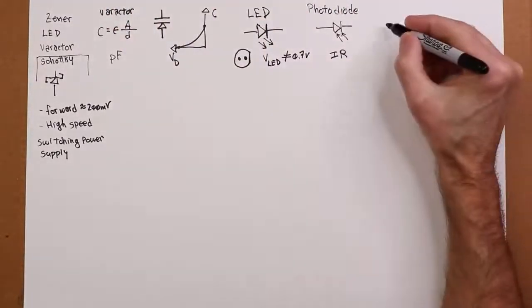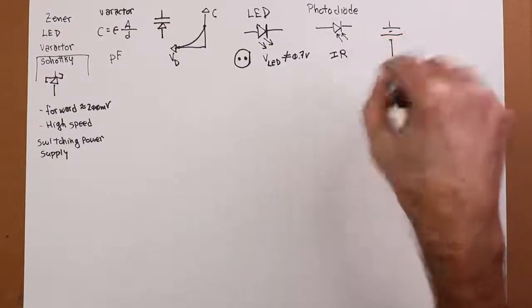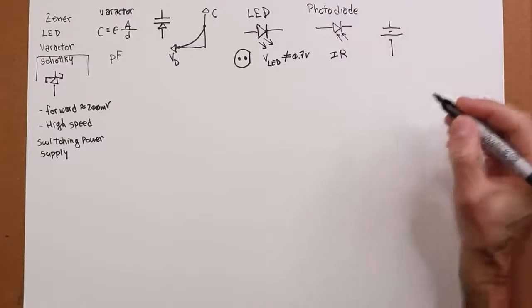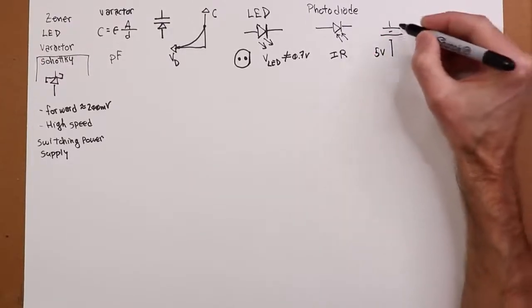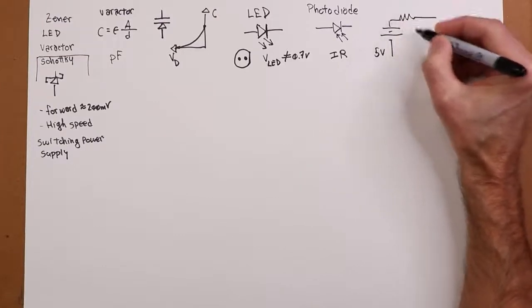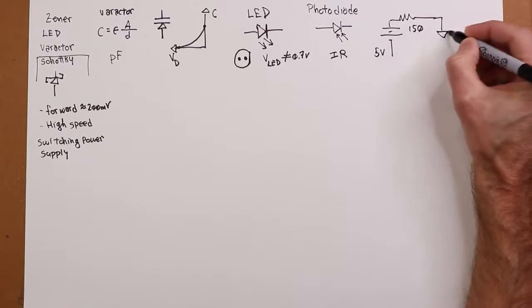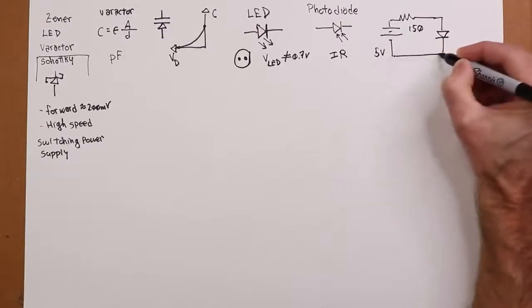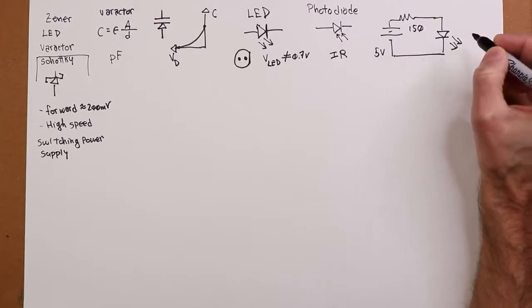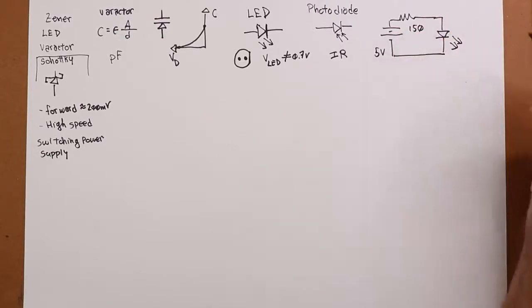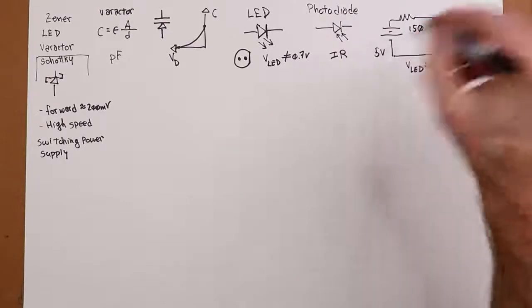But solving these circuits is fairly straightforward. If you have an LED, for example, you would solve it like the typical rectifying kind of signal diode examples. So if I had like a 5 volt DC power supply, and maybe I have 150 ohms over here, and here's my LED, and maybe the forward drop on this for the brightness that I'm looking for, let's say VLED is 2 volts. So I want to find out what's the circulating current here.